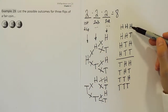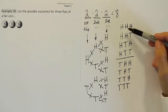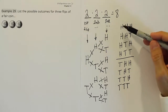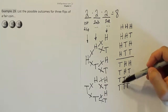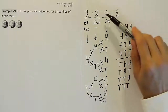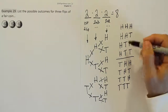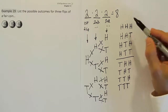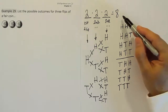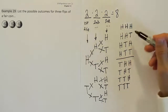Before we leave this problem, I want to point out a pattern that emerges. The last column alternates every other one: heads, tails, heads, tails, heads, tails, heads, tails. The second column alternates by double that — heads, heads, tails, tails, heads, heads, tails, tails. And the first column alternates by double that one — four heads, then four tails. The reason it's doubling each time is because of the two possible outcomes per trial. Had it been three outcomes per trial, it would triple in the alternation. The columns alternate by powers of two: two to the zero, two to the one, two to the second power. If there were another column, it would alternate every eight — two to the third power — and so on.